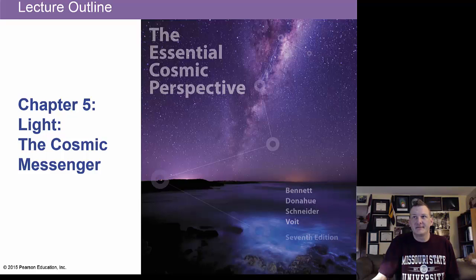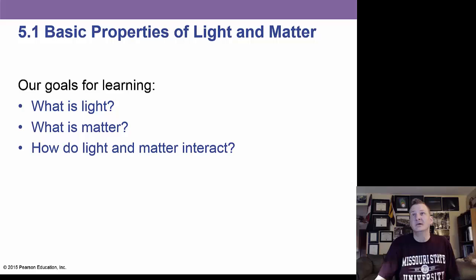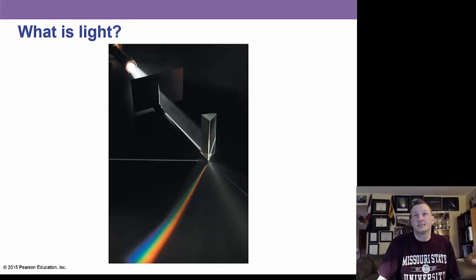Okay, welcome back. This is Chapter 5, Light, the Cosmic Messenger, out of the Essential Cosmic Perspective book. We're going to start with light and matter, and our goals here is to find out what light is, what matter is, and how they interact with each other.